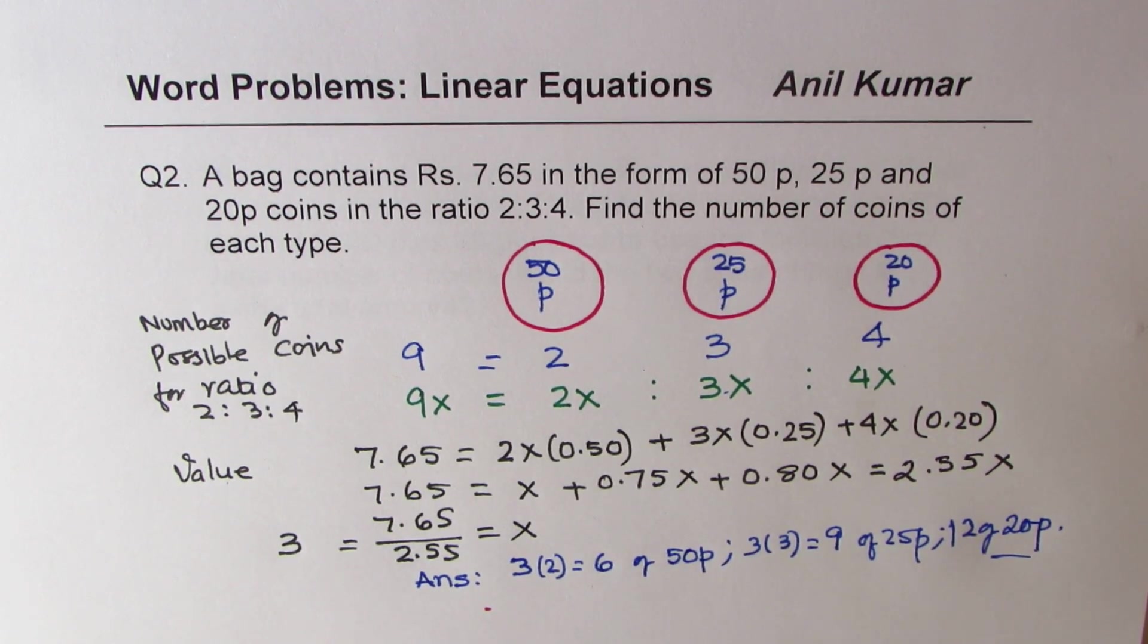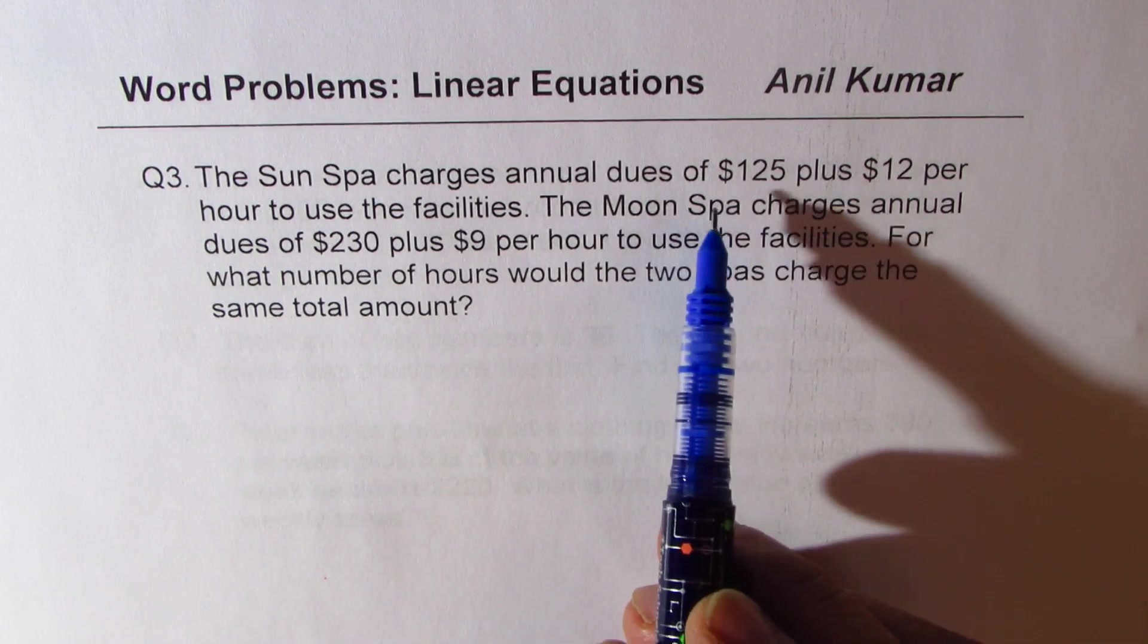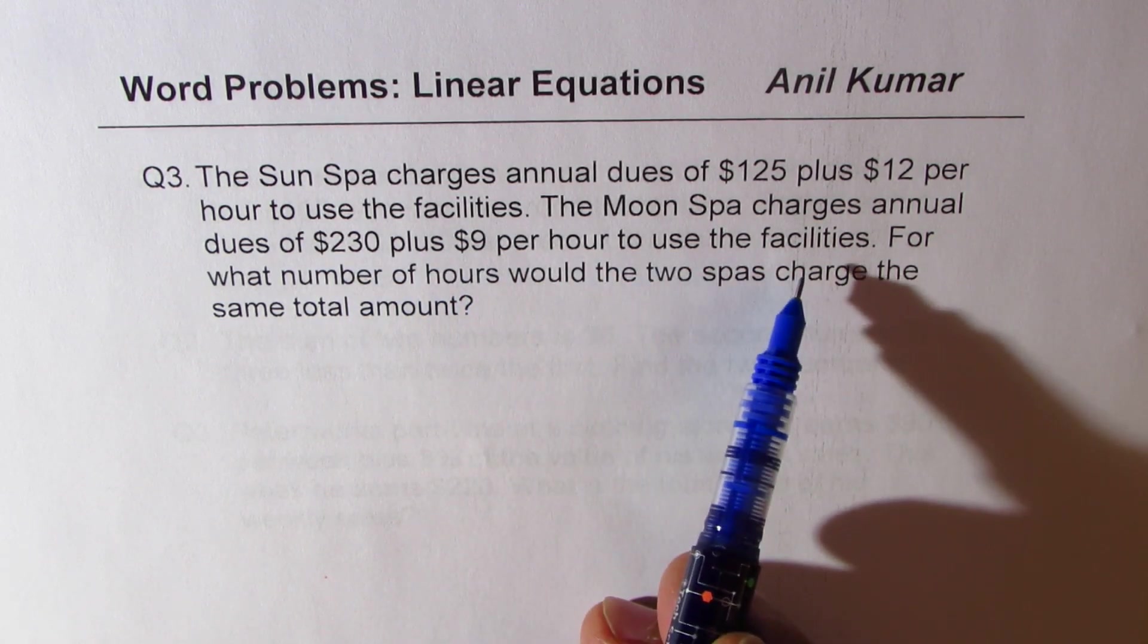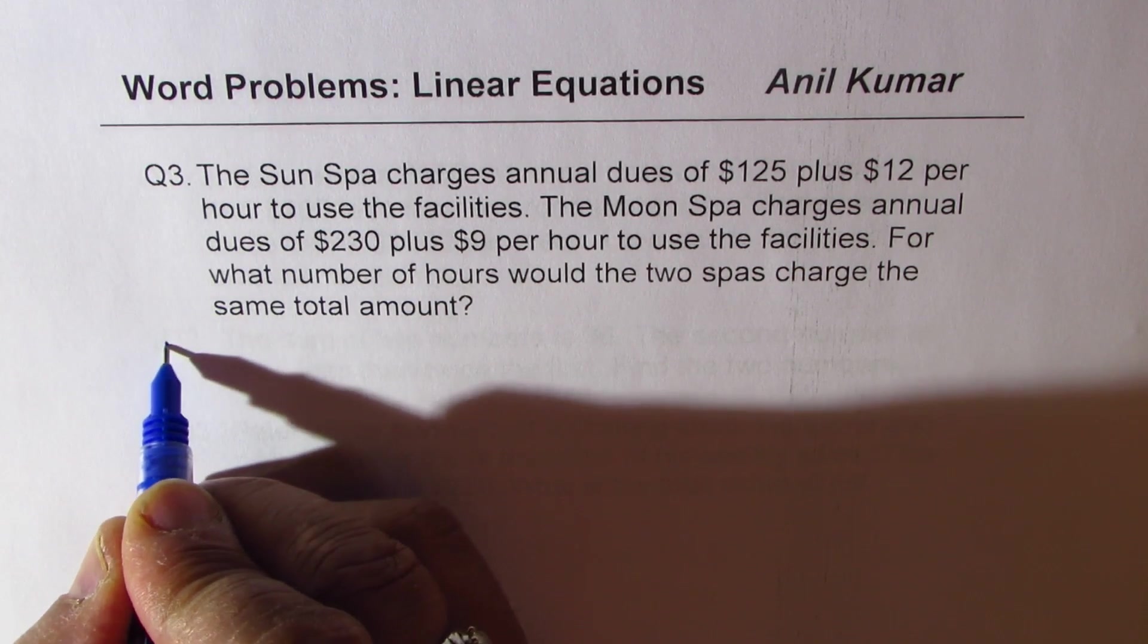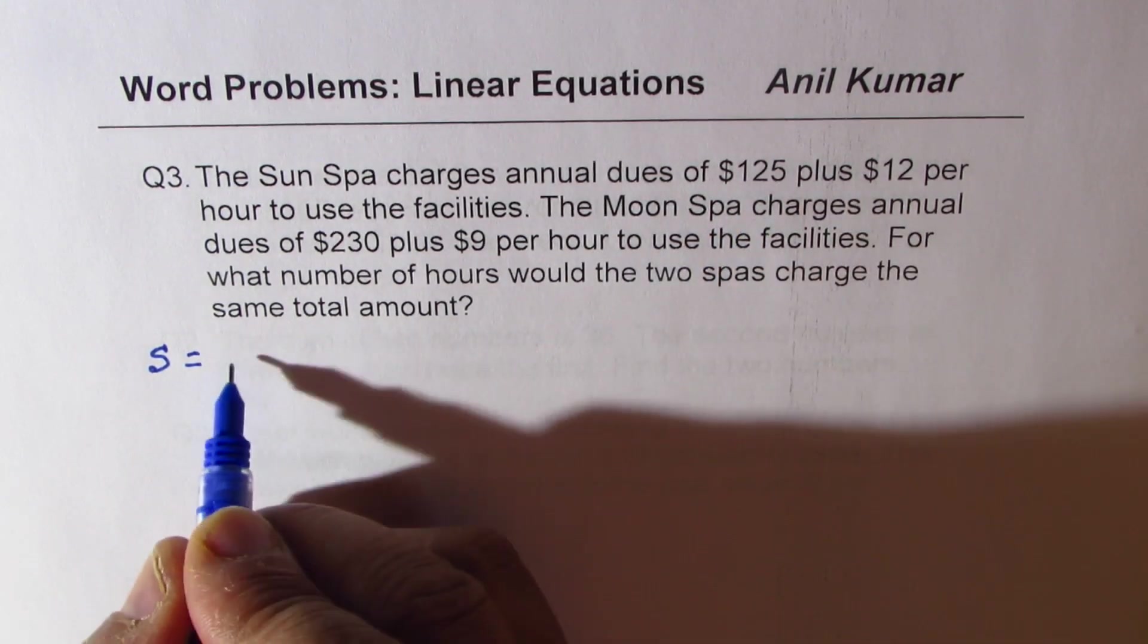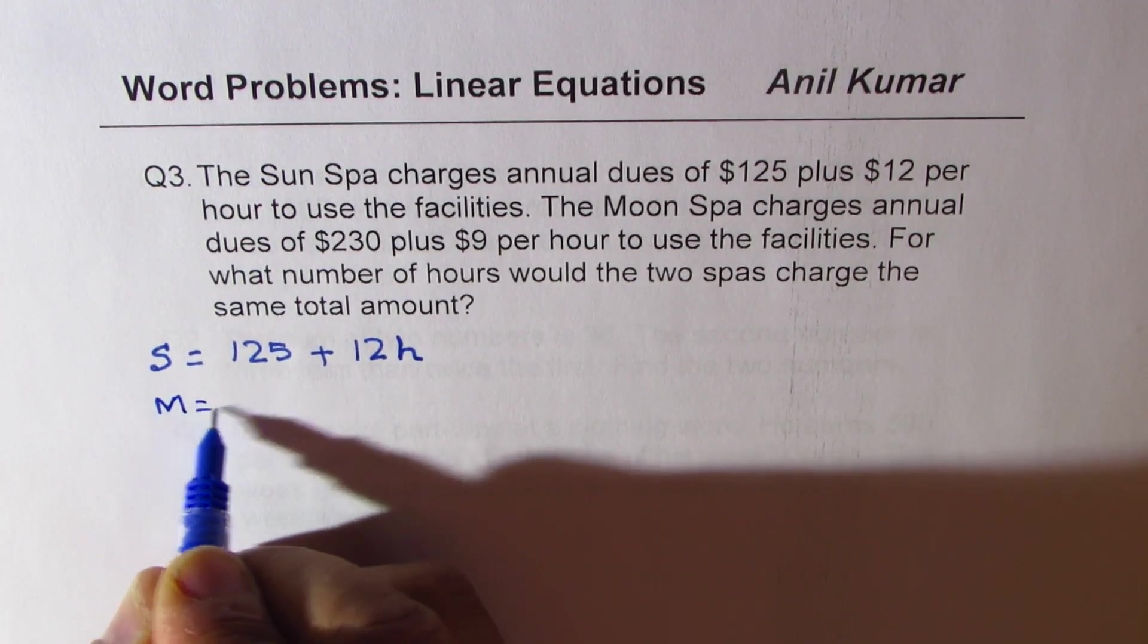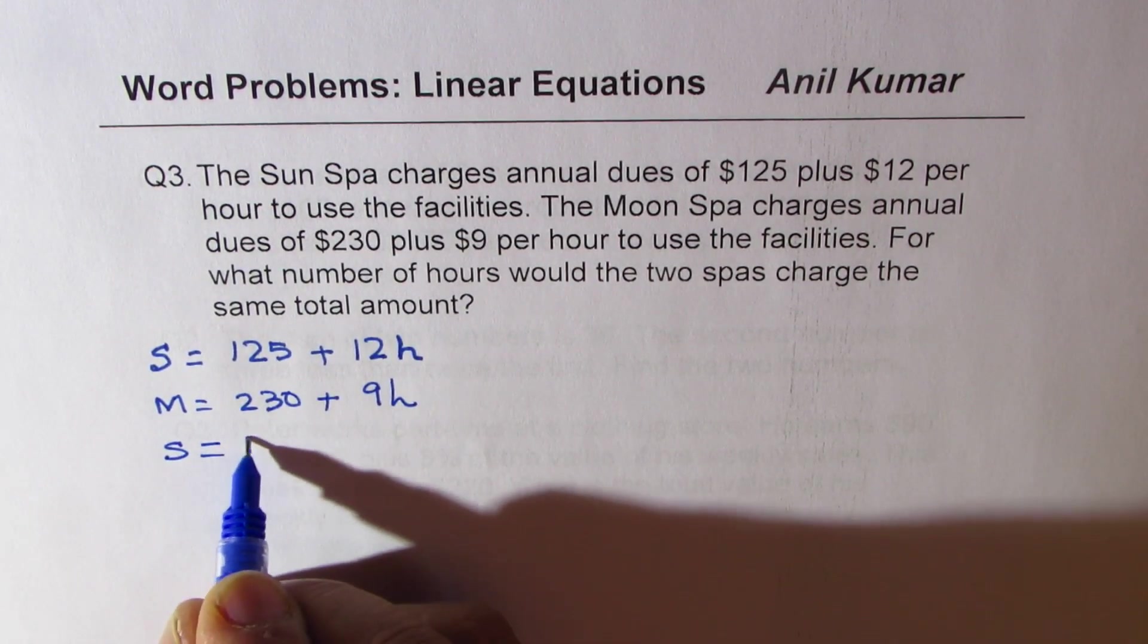Let's move on and take up the next question, which is question number 3. The sun spa charges annual dues of $125 plus $12 per hour to use facility. The moon spa charges annual dues of $230 plus $9 per hour to use the facilities. For what number of hours would the two spas charge the same amount? So we can say sun spa charges is $125 plus $12 times H, number of hours. For the moon spa, it is $230 plus $9 per hour. Now when will they be same, the charges are same.